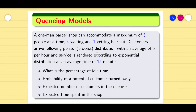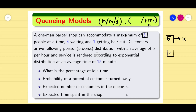We are going to see one more barber problem. We have to identify whether the problem is finite or infinite. The arrival rate is Poisson, service rate is exponential, and there is only a single server. We have to check whether the capacity is finite or infinite, and the discipline is first in first out. A one-man barber shop can maximum accommodate five people at a time, so the system capacity k is equal to 5. Out of these, four persons are waiting and one is getting serviced. So it is a finite system capacity problem where k equals 5.